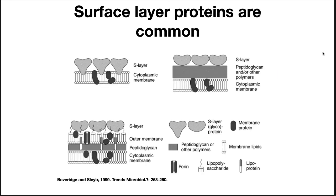Outside the cell wall, other surface layers are common. These will often consist of glycoproteins — proteins that are decorated with sugars — that link together and form a repeating matrix that covers the surface. These proteins serve as another protective layer to the cell.